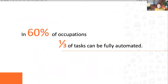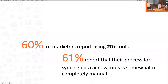There's another study by Smartsheets, an Airtable competitor, that found in 60% of occupations, one third of tasks can be fully automated — something a lot of people aren't doing. Also, 60% of marketers report using 20 or more tools, and more than half of their process is syncing data across those tools somewhat or completely manually.